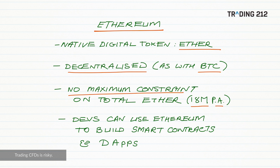Developers can use Ethereum to build what are called smart contracts and decentralized apps, or dApps. To really get to the heart of what Ethereum offers, we need to have a little understanding of smart contracts. So let's take a simple look at this using a common analogy.